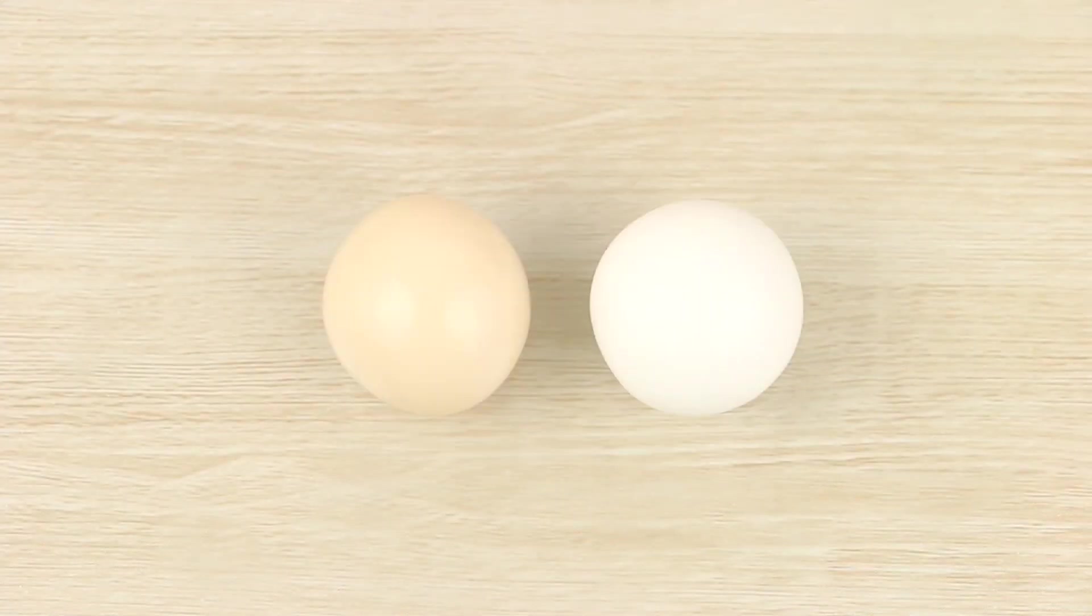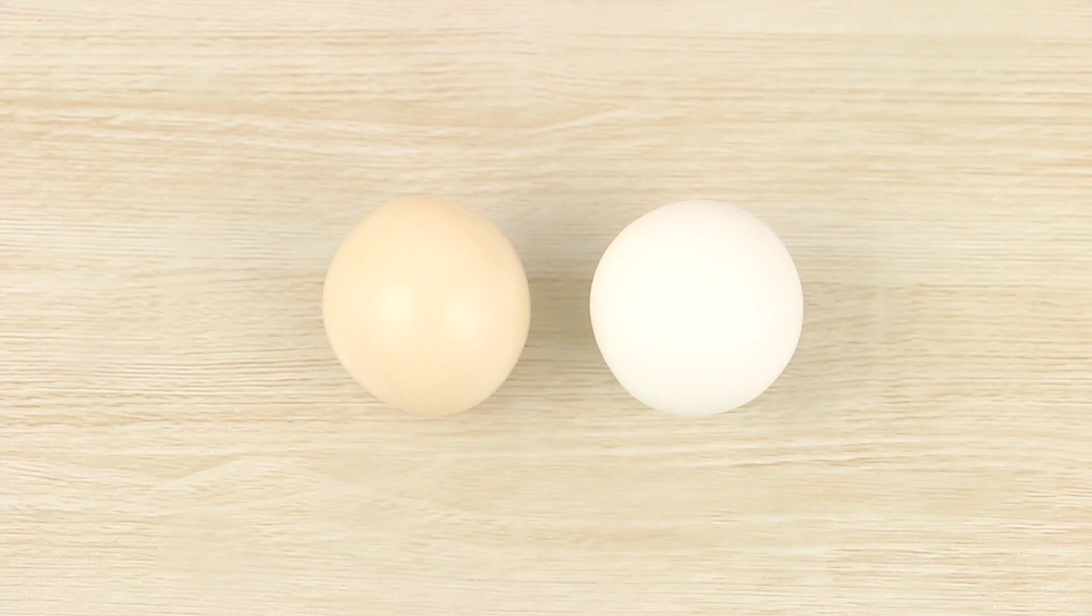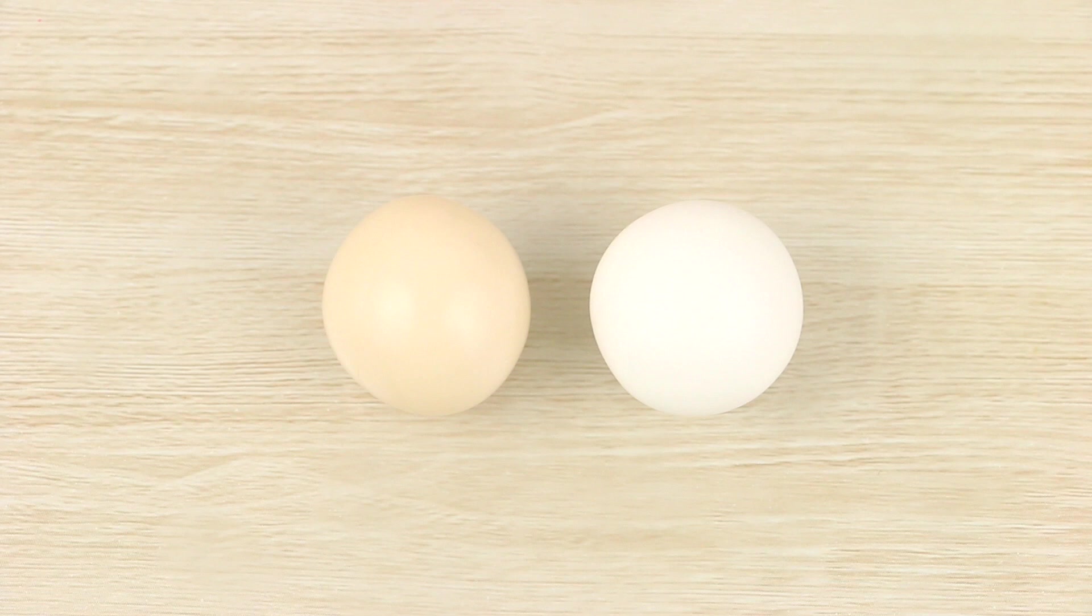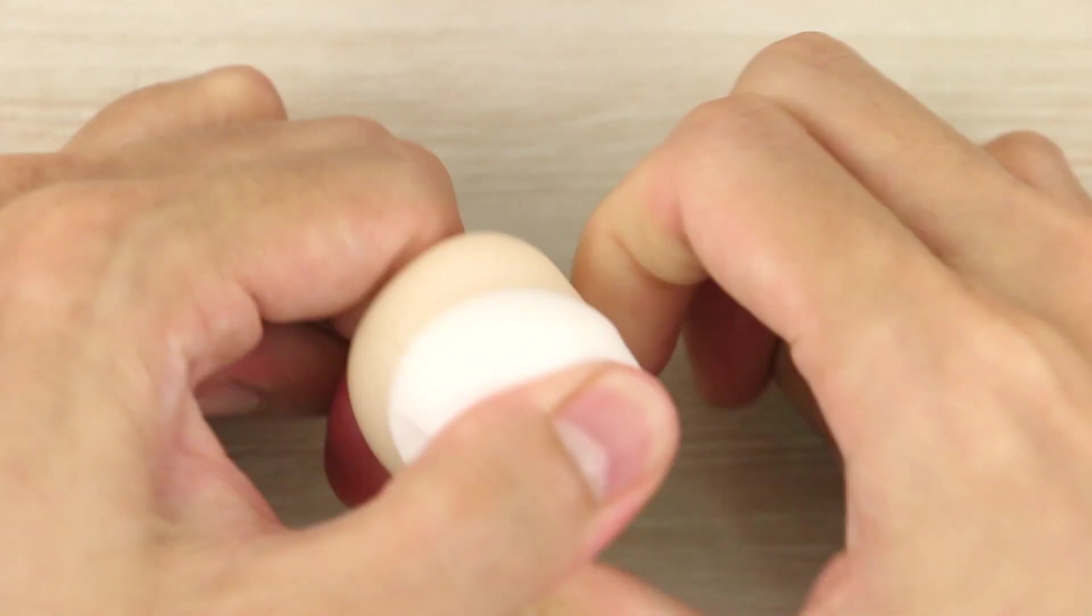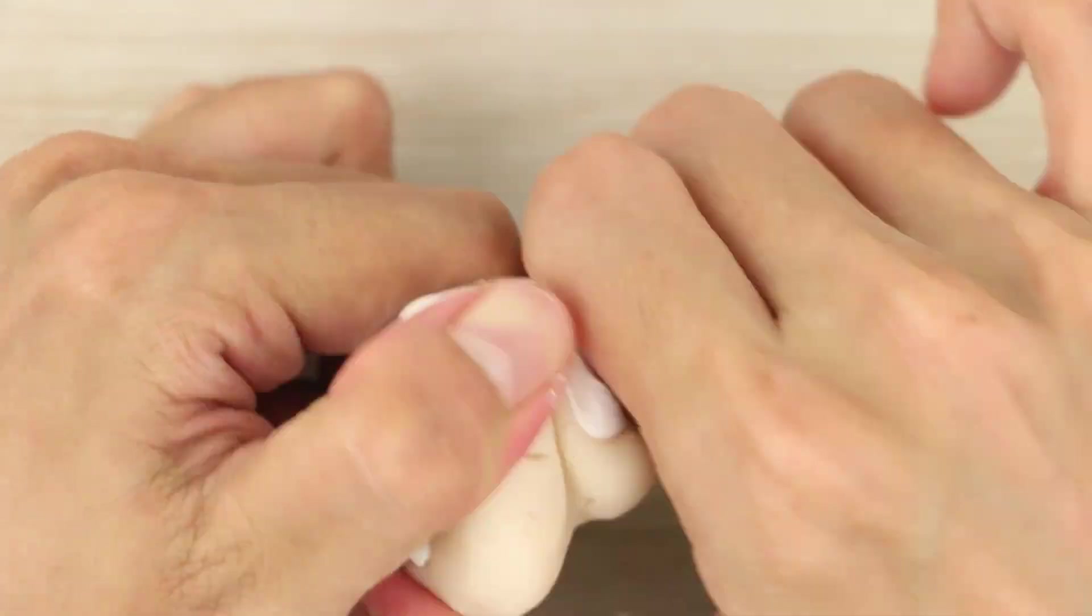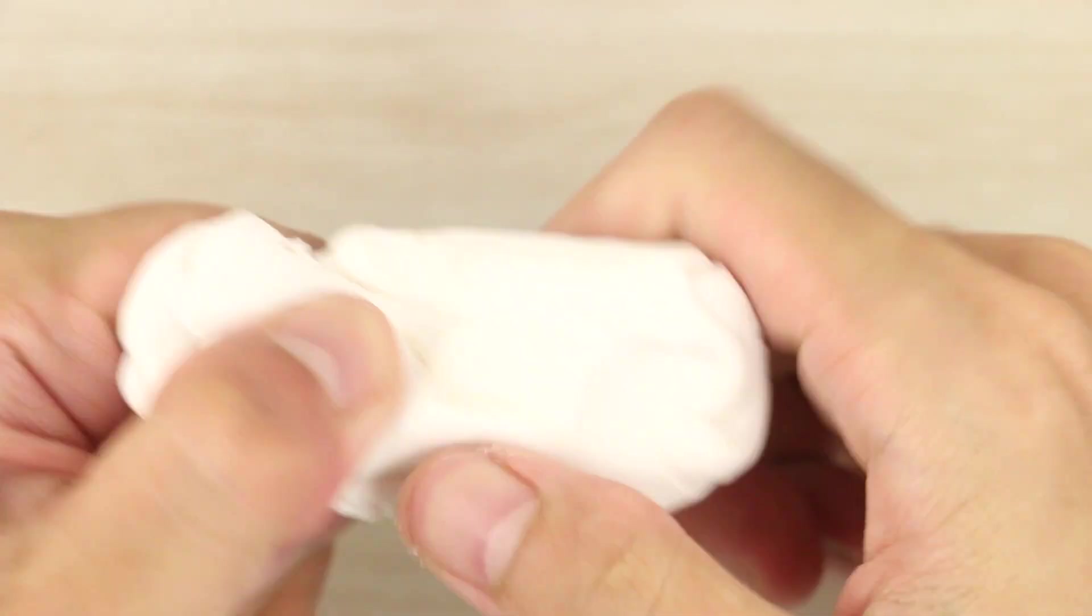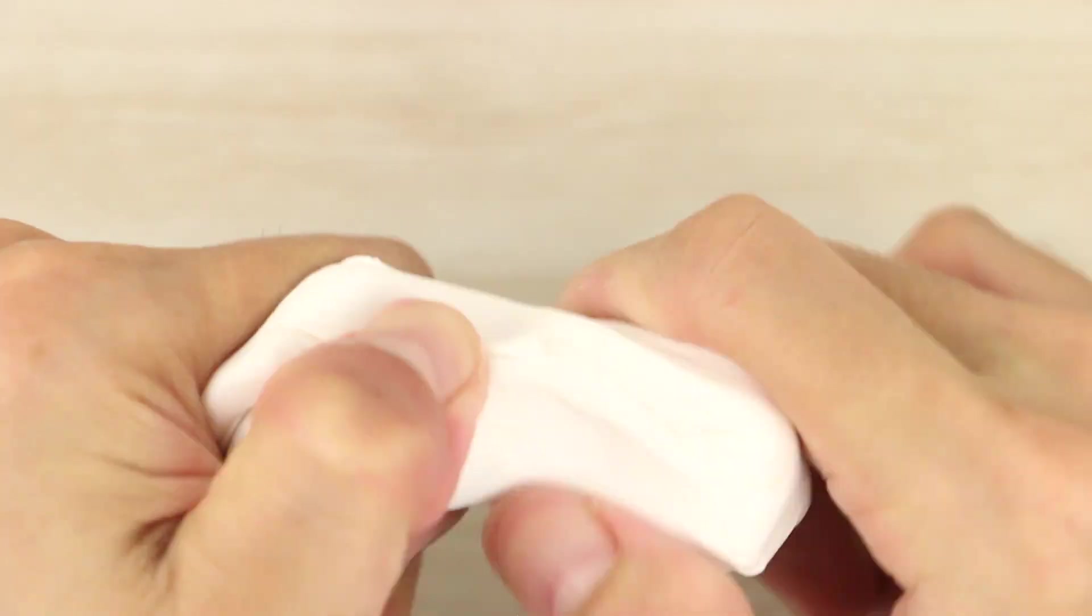So while those are baking, I'm moving on to making the three colored Neapolitan ice cream. So I have equal sized balls of white and translucent clay, which are on the pretty large side, and I'm going to mix the two together so that it forms one color. And this is just so that the end result has a little bit of translucency, like real ice cream does.